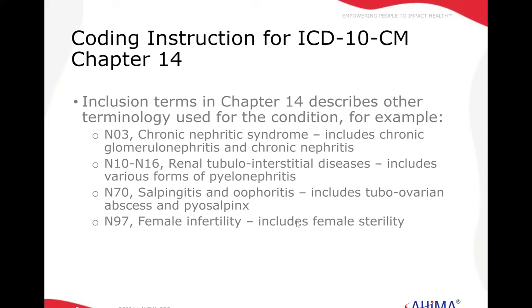You'll also see in N10 through N16, renal tubular interstitial disease; N70, salpingitis and oophoritis; and N97, female infertility.